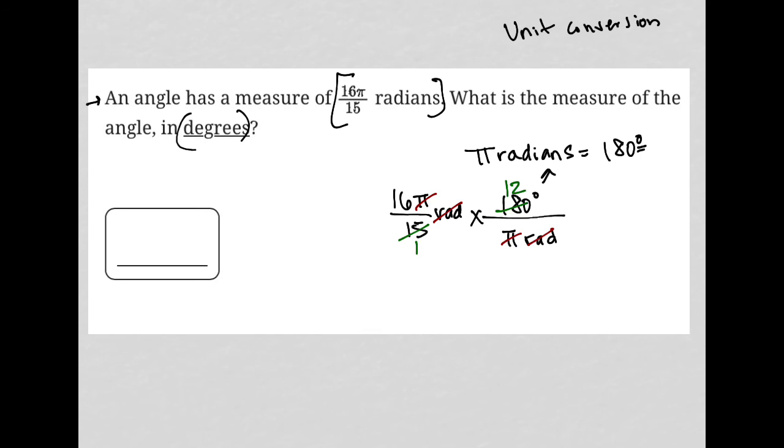We can take our calculator and multiply 16 times 12. What we get here is 192 degrees. So that's our answer, 192.